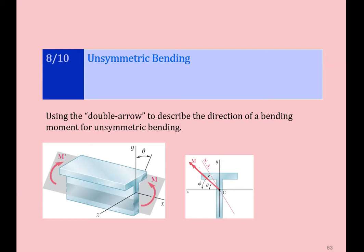In this section, it will be more convenient to use the double arrow sign to indicate the orientation of the moment. The way to obtain the double arrow sign is to align your four fingers in the direction of the moment applied, and then your thumb points to where the double arrow indicates. Schematically, the double arrow for this particular case will look like this. So we use the double arrow to describe the direction of the bending.